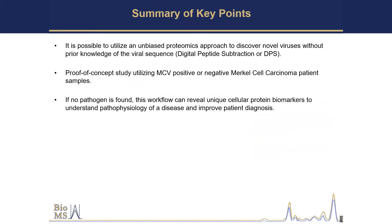To summarize some of the key points: we can use an unbiased proteomics approach to discover novel viruses without prior knowledge of that viral sequence — that's what we call digital peptide subtraction. We're currently working with them on another cancer model looking to see if we can find a novel virus. This was a proof of concept study to demonstrate that we can do it, using the MCV positive or negative Merkel cell carcinoma patient samples. And if no pathogen is found, this workflow can reveal possible biomarkers to understand the disease and maybe even improve patient diagnosis.